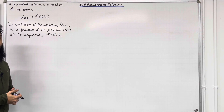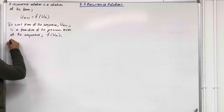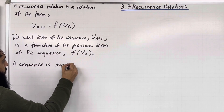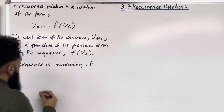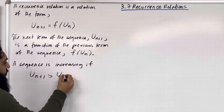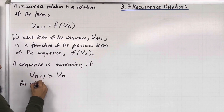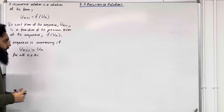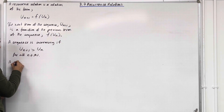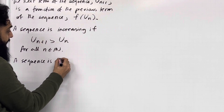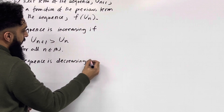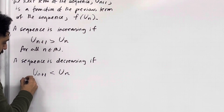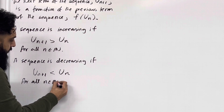Let's have a look at the definition of an increasing sequence. A sequence is increasing if u_(n+1) is greater than u_n for all natural numbers n. A sequence is decreasing if u_(n+1) is less than u_n for all natural numbers n.